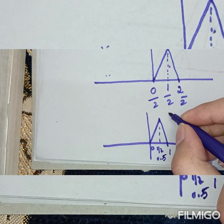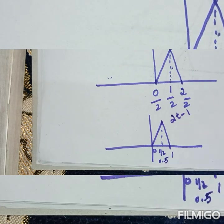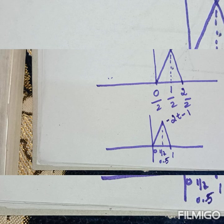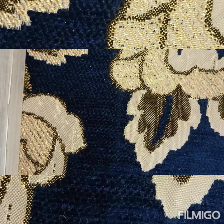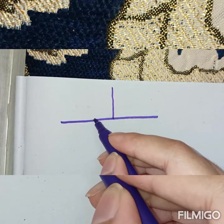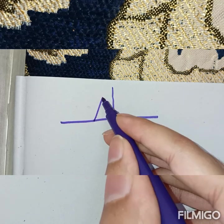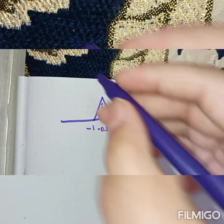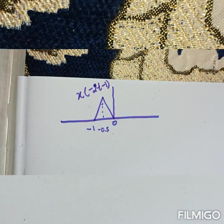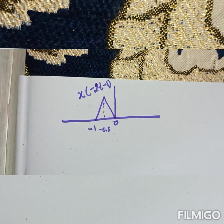Now perform the reflection operation. The reflection is inside the x of, so you shift the signal to the left side. The negative values of t are taken. Writing the reflected signal: the x-axis becomes 0, minus 0.5, and minus 1. This is x of minus 2t minus 1.